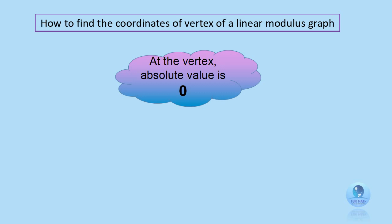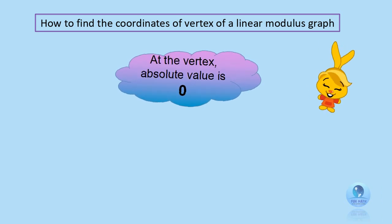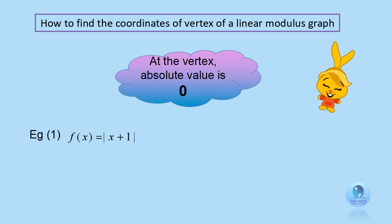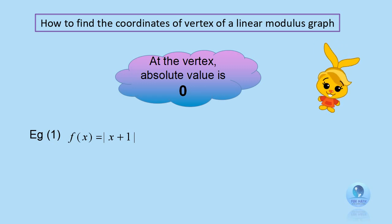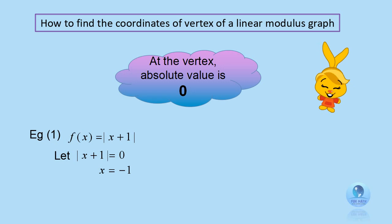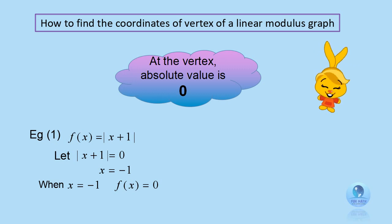Now you need to learn how to find the coordinates of the vertex of a linear modulus graph. At the vertex, the absolute value is always 0. Let's look at this example: given f of x equals to modulus x plus 1, find the coordinates of the vertex. To find the vertex, let the modulus part of the function equal to 0. In this case, let modulus x plus 1 equal to 0, and you get x equals to negative 1. When you substitute x equals to negative 1, you get f of x equals to 0. So your vertex is at negative 1, 0.